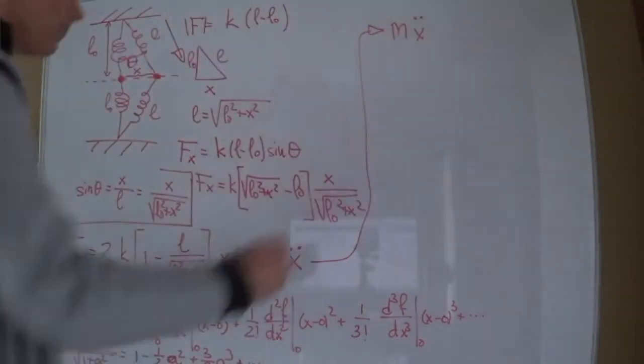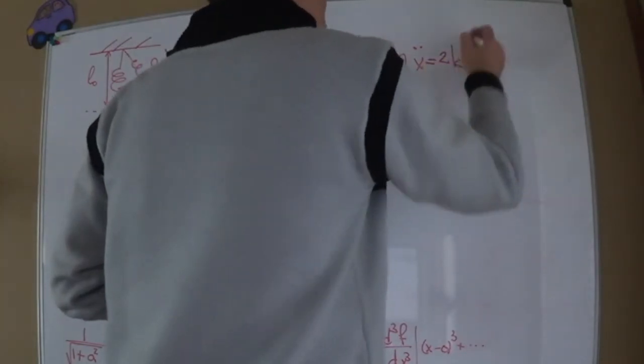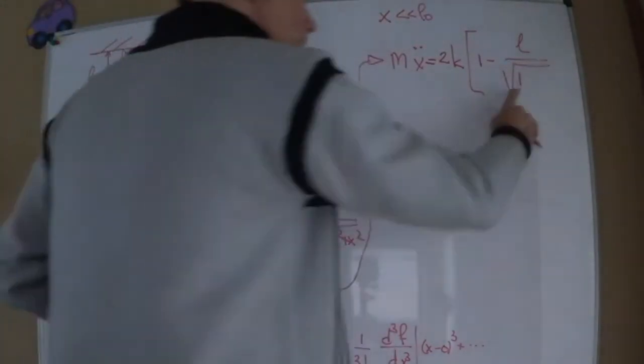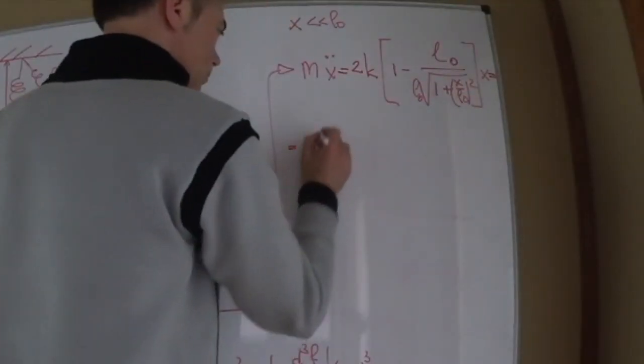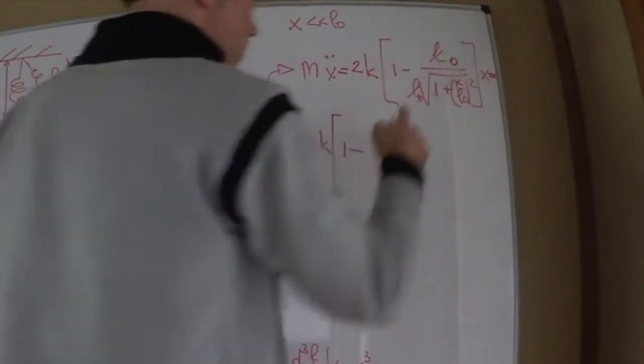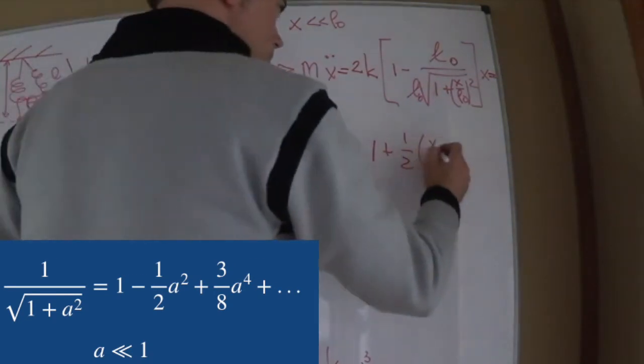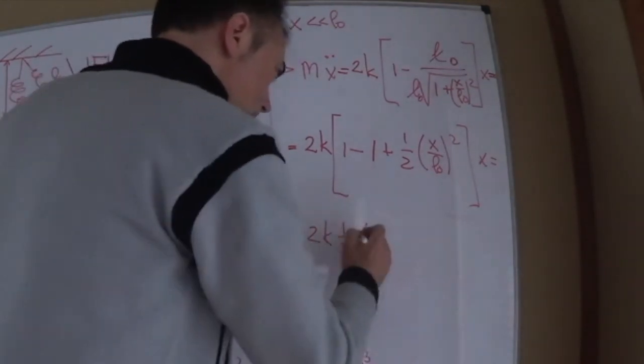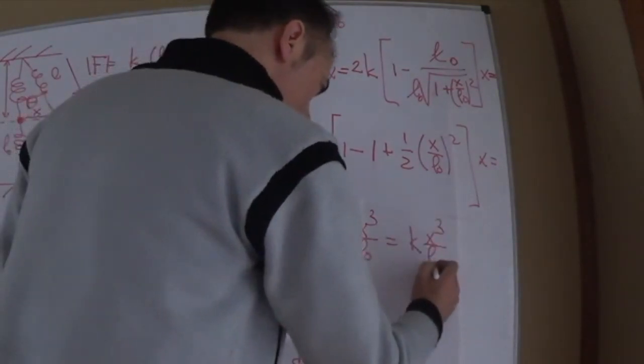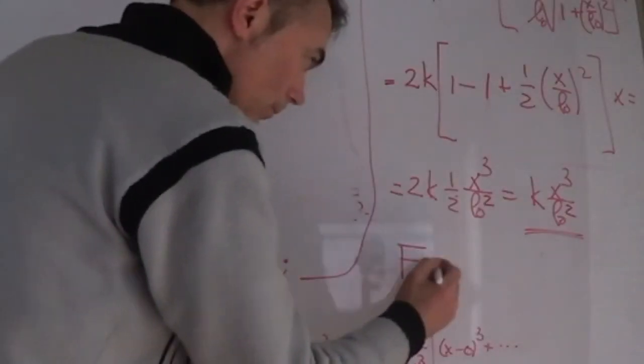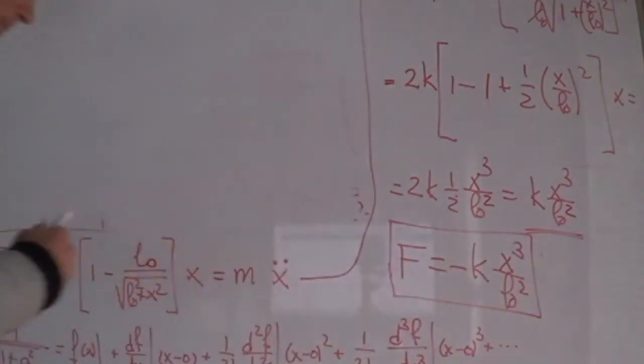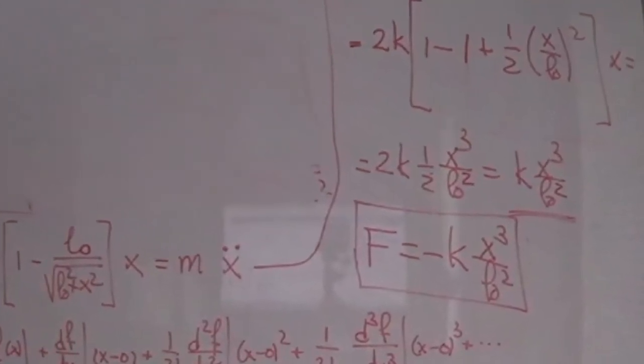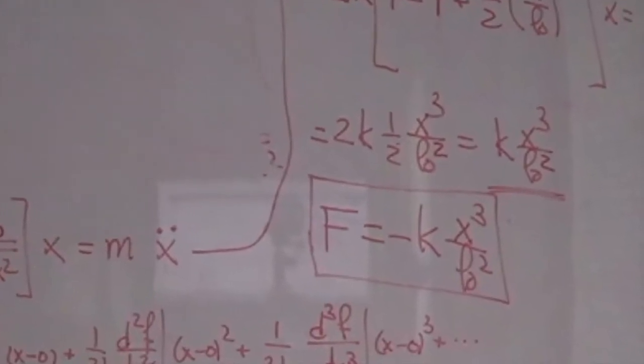This leaves us with this expression for the force on the mass. Look that the lowest term is to the power of 3. If we neglect high-order terms, we get f of x approximately equal to minus k over L0 square times x to the cube. This is a clearly nonlinear force.